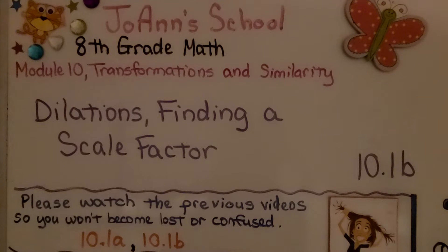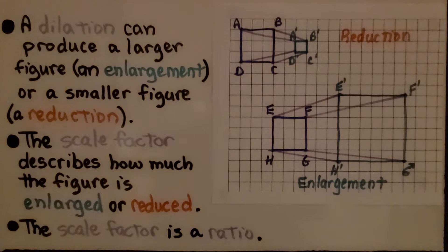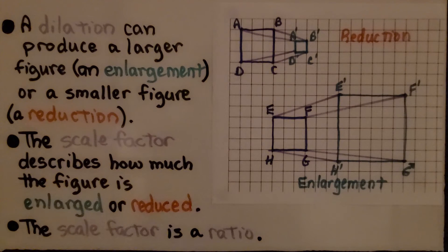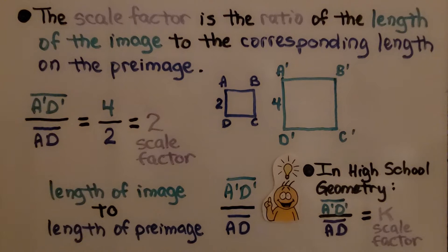Dilations: Finding a Scale Factor — Lesson 10.1B. A dilation can produce a larger figure, an enlargement, or a smaller figure, a reduction. The scale factor describes how much the figure is enlarged or reduced. The scale factor is a ratio — specifically, the ratio of the length of the image to the corresponding length of the preimage.